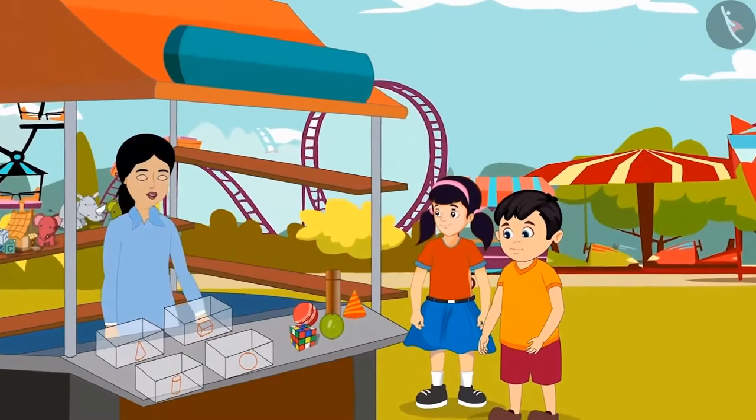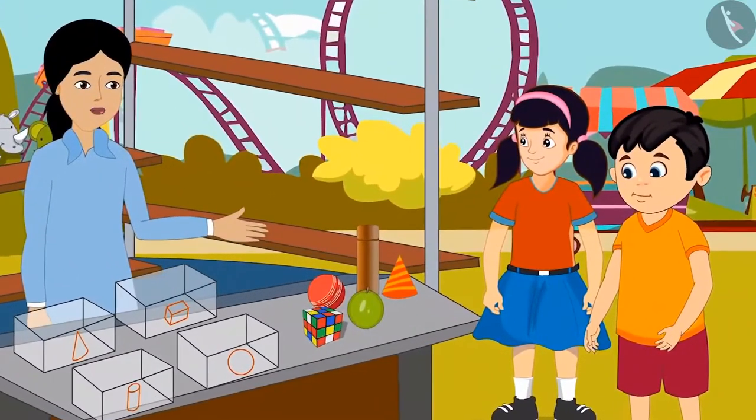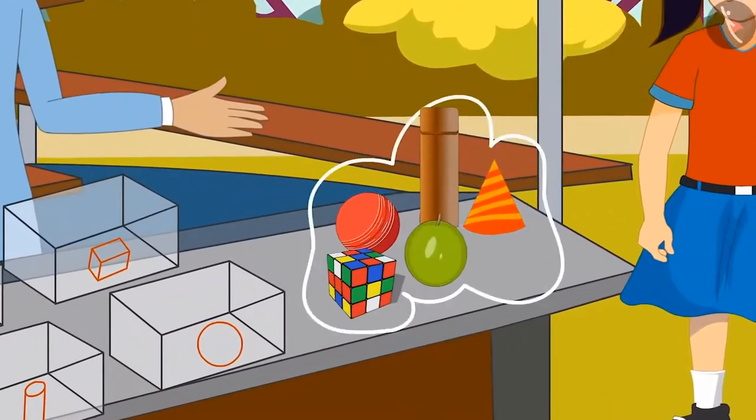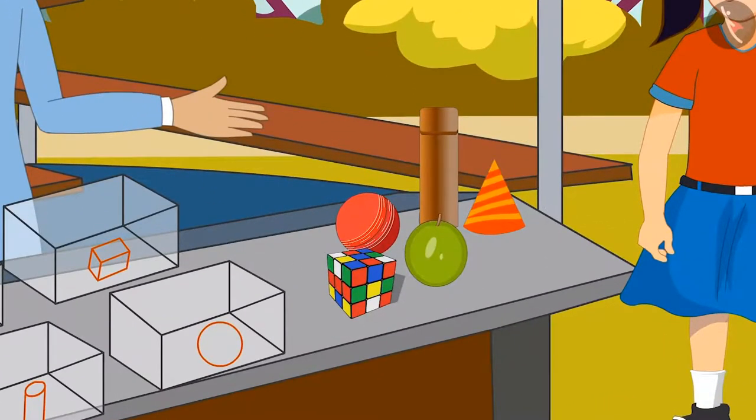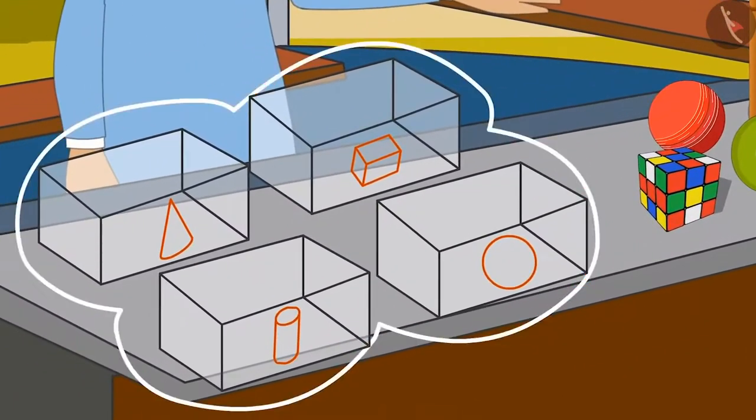Children, this is a special game. In this game, you have to sort all the items placed on the table one by one by identifying their shape and should place them in four different boxes placed there.